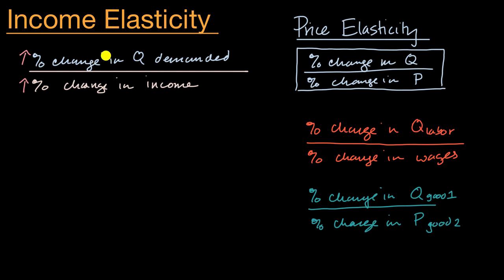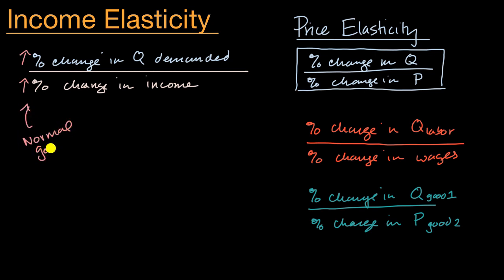Normally, you would expect that when our percent change in income goes up, the same thing would happen to our percent change in quantity demanded. For example, let's say we're talking about the market for vacations. As my income goes up — as most people's income goes up — they might be able to afford larger or better vacations. That would be a normal good. This is a situation of a normal good, just as what you would expect.